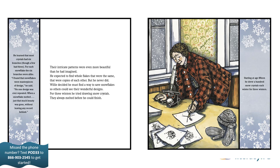Willie decided he must find a way to save snowflakes so others could see their wonderful designs. For three winters, he tried drawing snow crystals. They always melted before he could finish. He learned that most crystals had six branches, though a few had three. For each snowflake, the six branches were alike. I found that snowflakes were masterpieces of design, he said. No one design was ever repeated. When a snowflake melted, just that much beauty was gone without leaving any record behind. Starting at age 15, he drew a hundred snow crystals each winter for three winters.